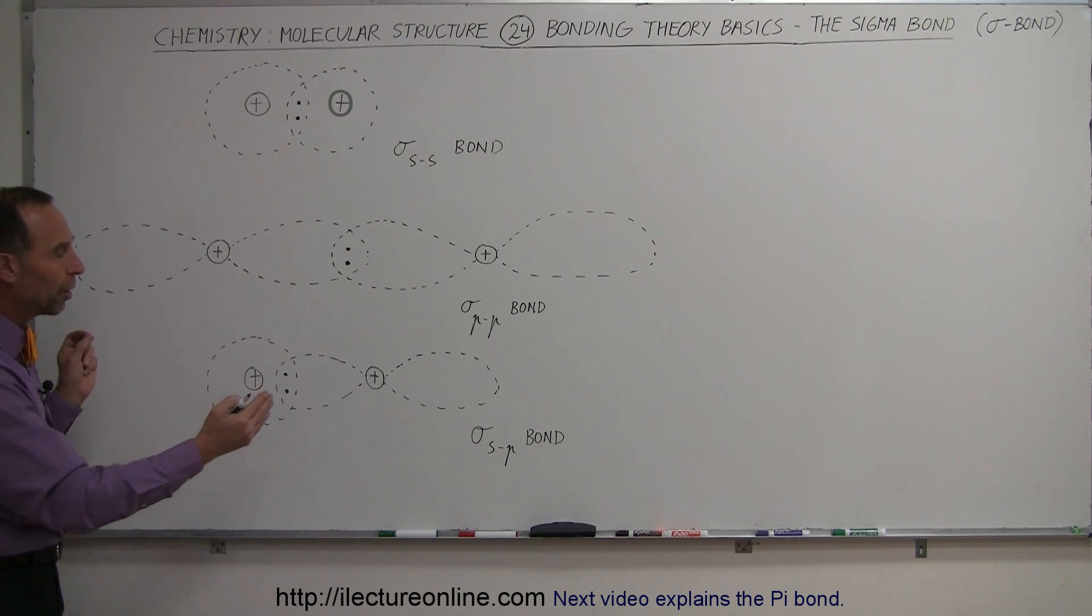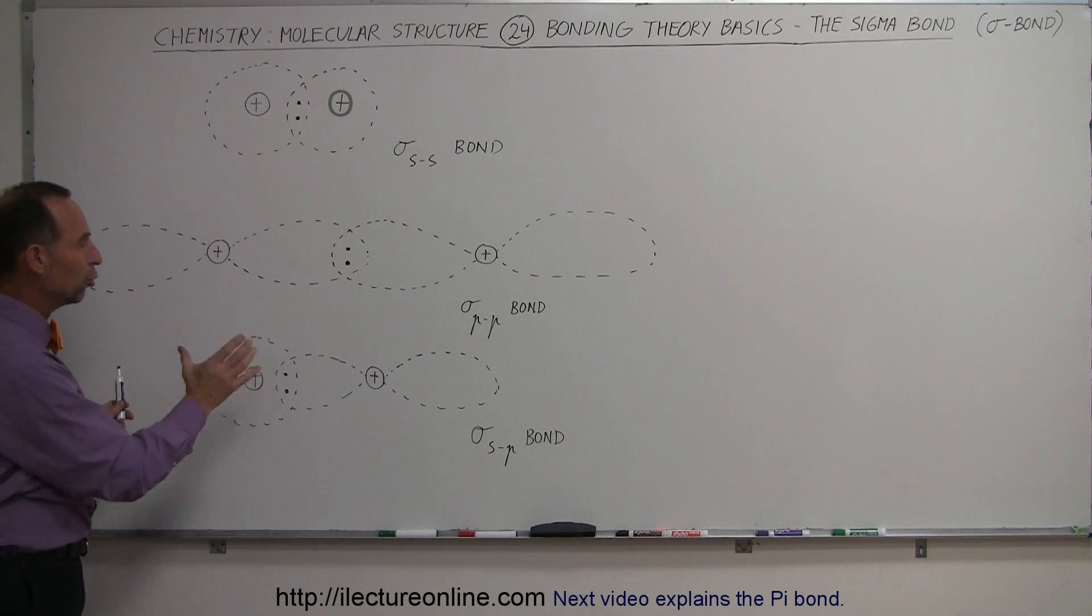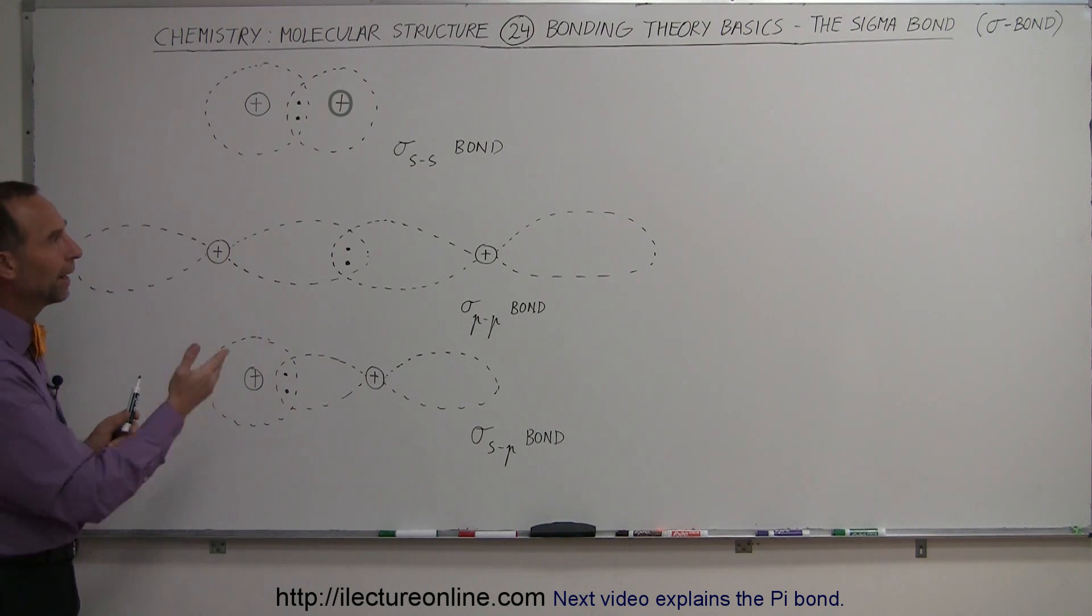So this is what we call the valence sharing concept between two orbitals with just one electron in them, and so we call it the sigma bond. And in a future video, we'll take a look at what we call pi bonding, where we have a different kind of arrangement.